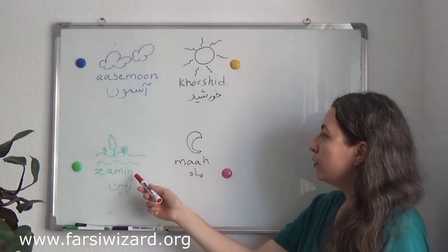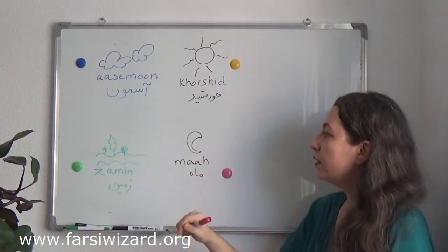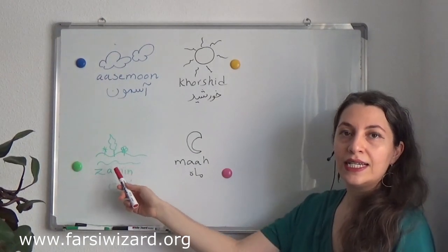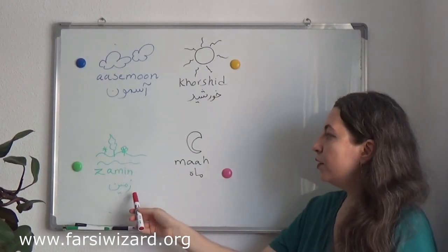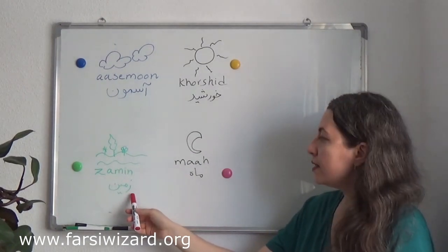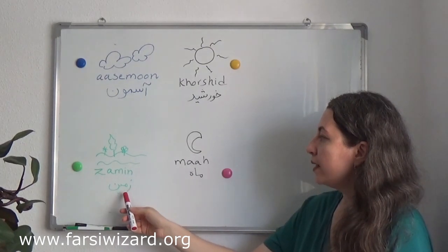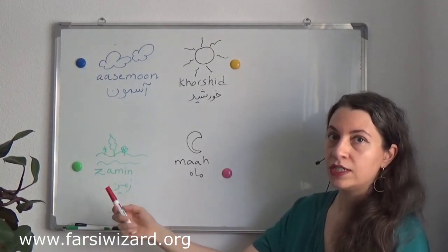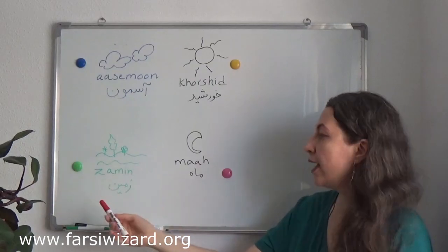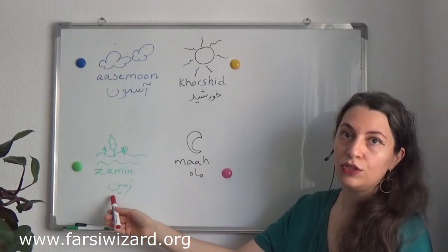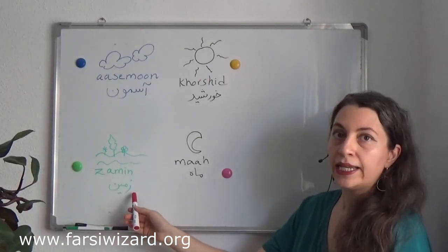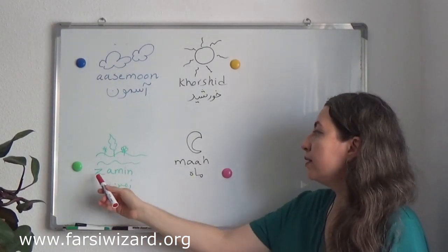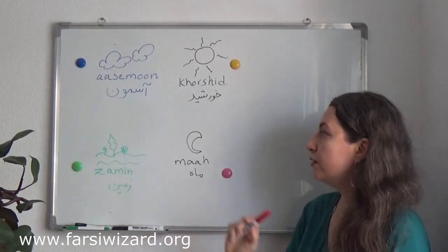Let's go to the other one, which is earth. Earth is 'zamin.' You notice the way it's written is Z, M, I, and N at the end. When I say N, it's the equivalent of N in English — in Farsi this letter is 'nun,' and the sound is like N in English. So zamin — zamin is earth.